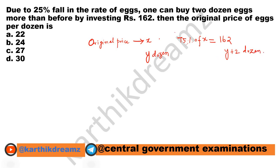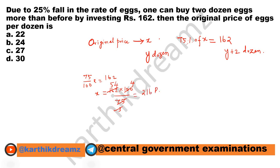Now, 75% of X equals 162. So 75 divided by 100 times X equals 162, therefore X equals 162 multiplied by 100 divided by 75. Simplifying — 4 times 54 — which equals 216 rupees.